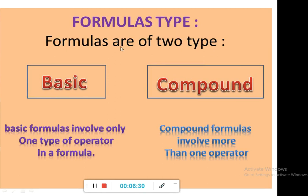If we talk about formula types, formulas in MS Excel are of two types: basic and compound. Basic formulas involve only one type of operator. That means if you are performing addition, there will only be addition. If you are performing subtraction, there will only be subtraction. Compound formulas involve more than one operator, like addition and subtraction or multiplication and division together. There's also text formulas where we can perform only one kind of operator, that is addition.